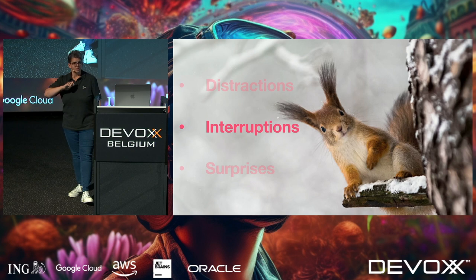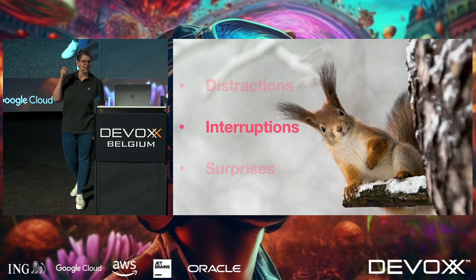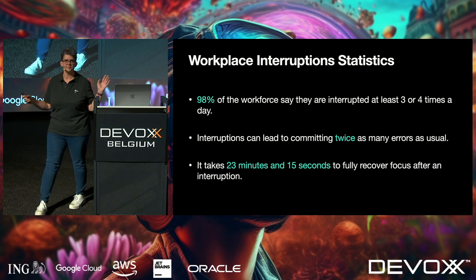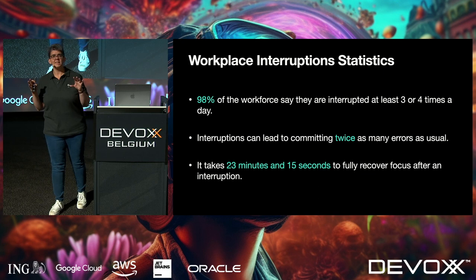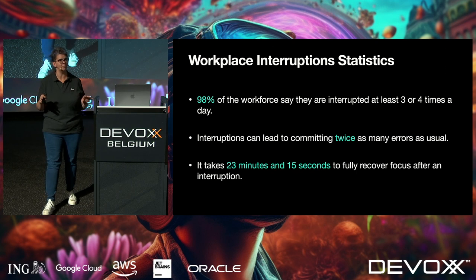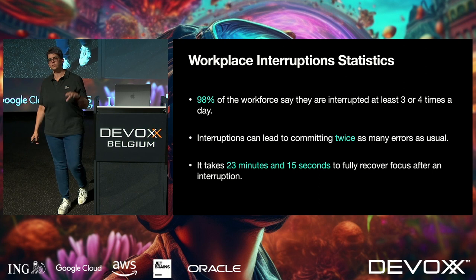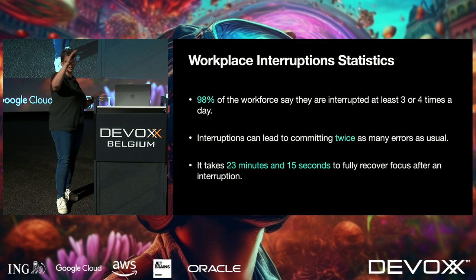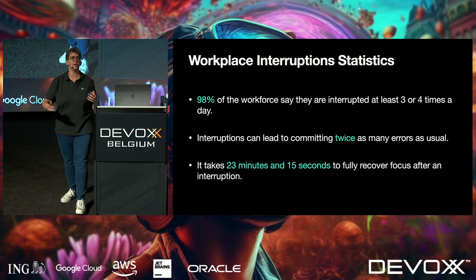That was developer distractions. How many of you get interrupted at work? Here's a survey: 98% of the workforce say they're interrupted at least three or four times a day — though that number seems very low, especially in a managerial role. The next point is fascinating: interruptions can lead to committing twice as many errors as usual. It's not just the cost of the interruption and getting back up to speed — the interruption itself increases the chance of making errors even after you return to full focus.